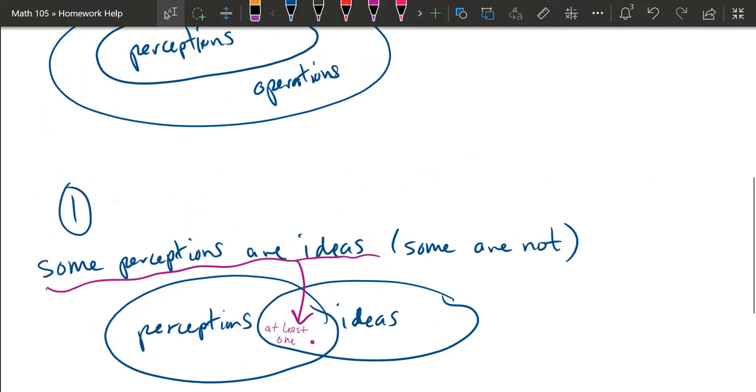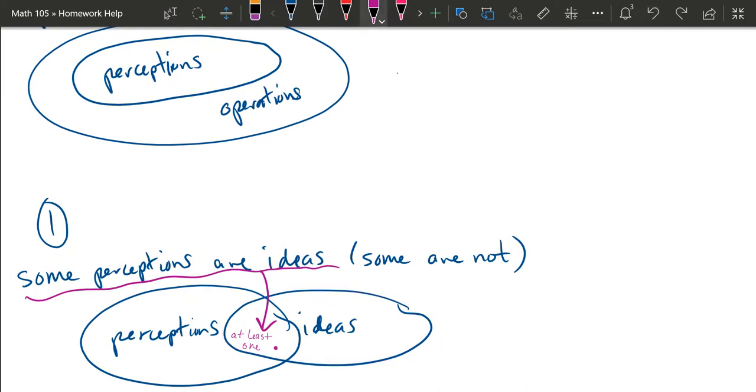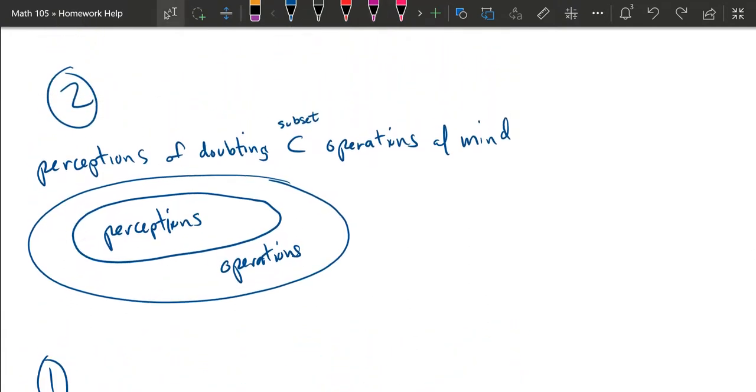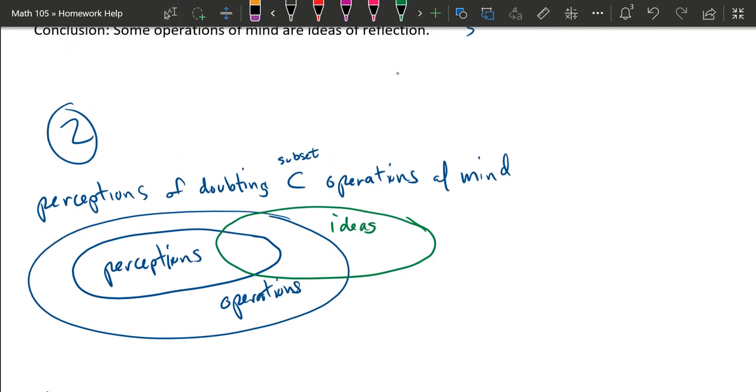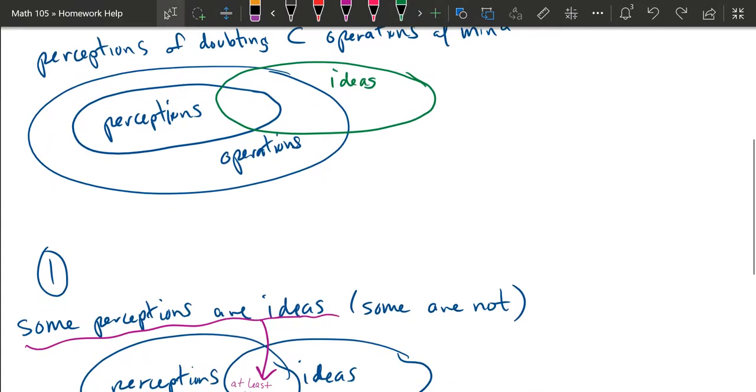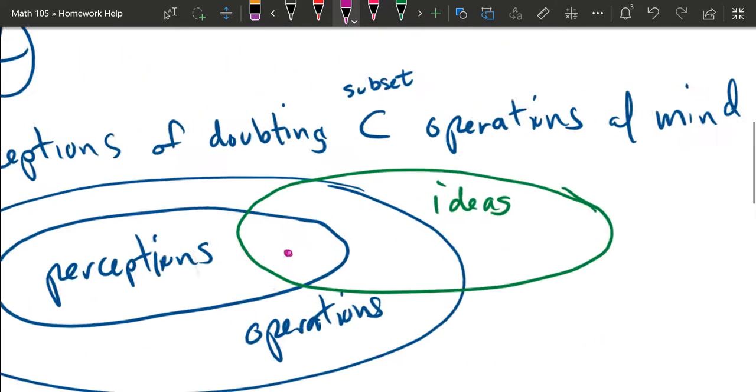And now we're going to combine these together. So basically what I'm going to do is take this ideas set right here and just rewrite it up here. And I'm going to use another color. We'll go with green. So these are ideas. And now notice it would not be correct to assume that all ideas are operations. If I just drew the ideas set like this, then I would be assuming that all ideas are also operations, which is not necessarily the case. There could be some ideas over here that are not perceptions and also not operations. There's one more piece of information. We have at least one thing, one element, that's a perception and an idea. And I'll take that back up here and I'll put that little dot in there. There's at least one in between these two.